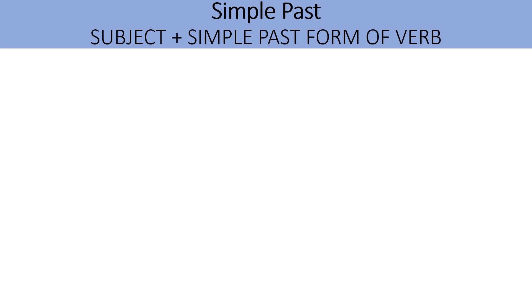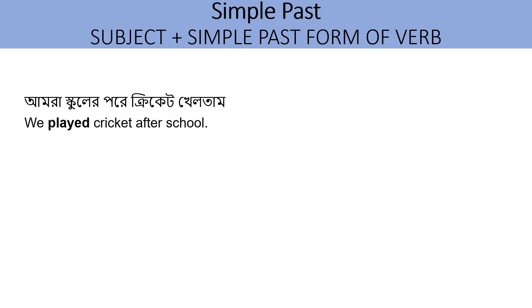We played cricket after school. The structure to follow: 'We' is the subject, and 'played' is the simple past form of the verb 'play'. Play → Played.